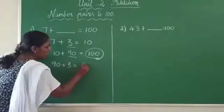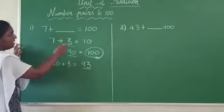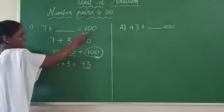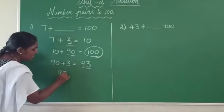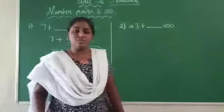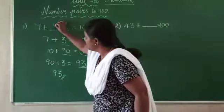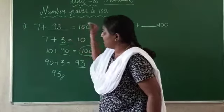Now you have to write standard form of 90 plus 3. That is 93. So it means when you add 93 with 7, you will get 100. So your answer is 93. Now we are going to do one more example with this. So you have to fill here 93.